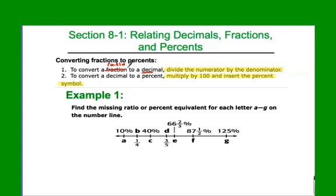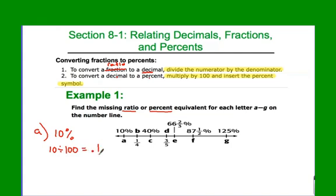Let's do a couple of these problems. You should be able to do these on your own, but you can follow along with me. Problem A: ten percent. I want to change this to a ratio. To do that, I take ten divided by 100 — move the decimal twice and I get 0.1. Since 0.1 has a 1 in the tenths place, ten is my denominator and one is my numerator. That's letter A.